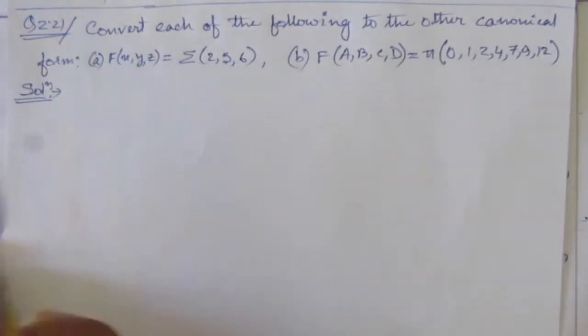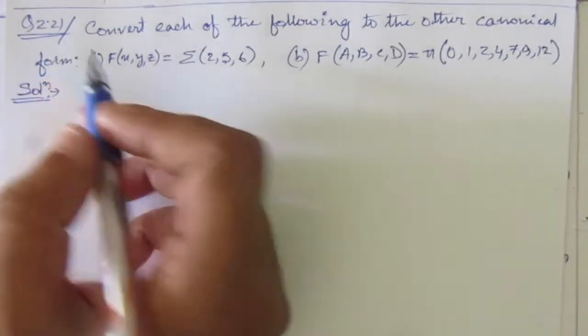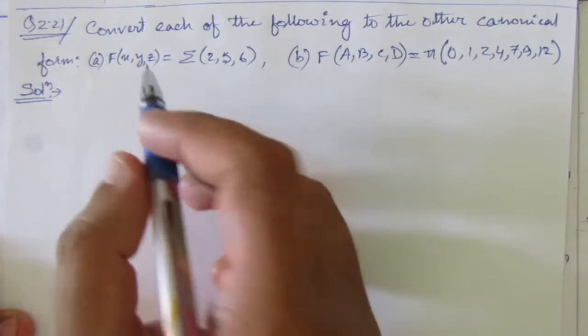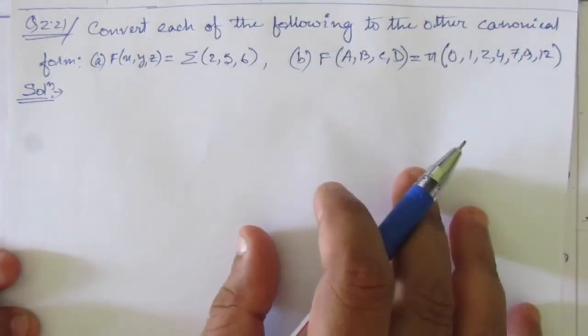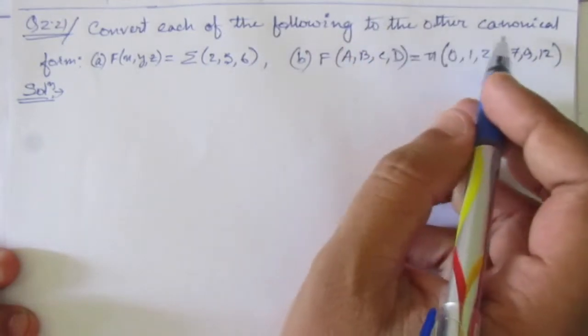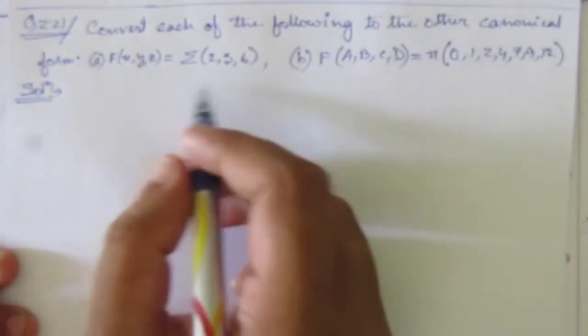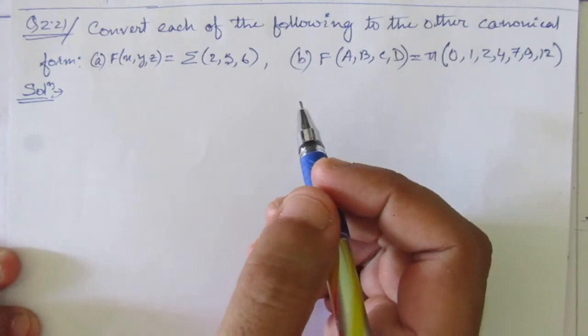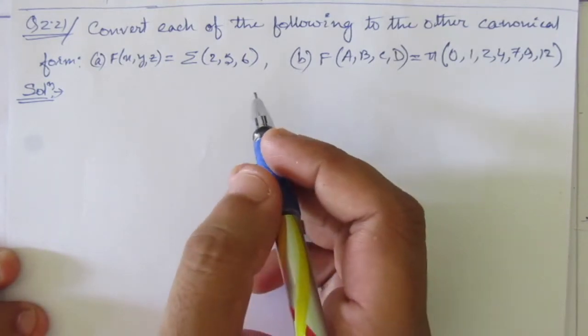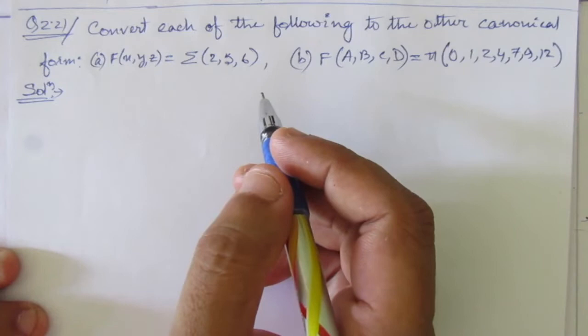In this video, I am solving problem number 2.21 from chapter number 2. The problem is convert each of the following - we are given two functions - to the other canonical form. That means we are given two functions in either sum of product or product of sum form, and we have to convert each of them to the other canonical form.